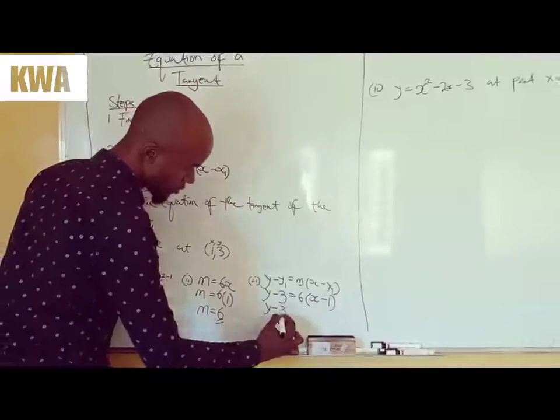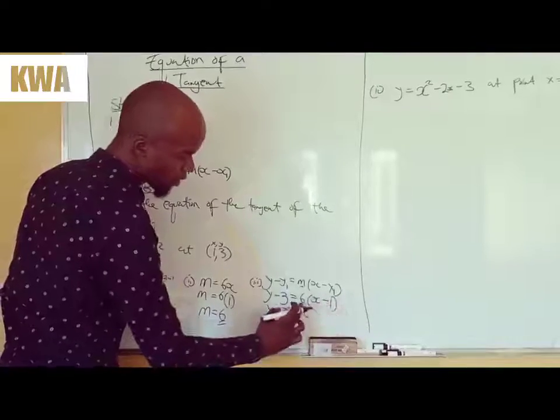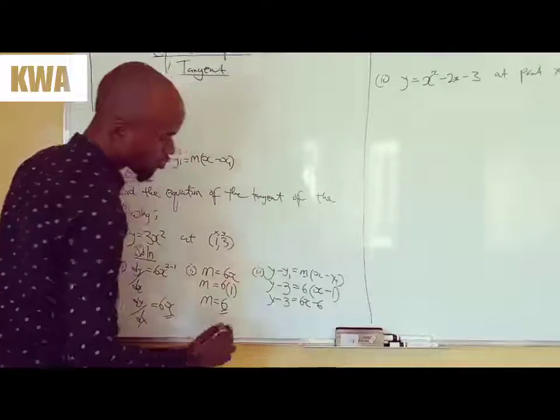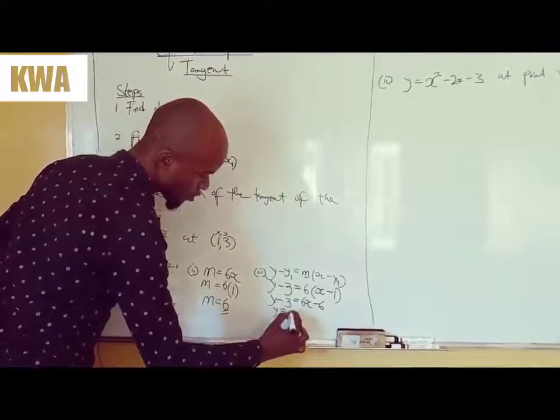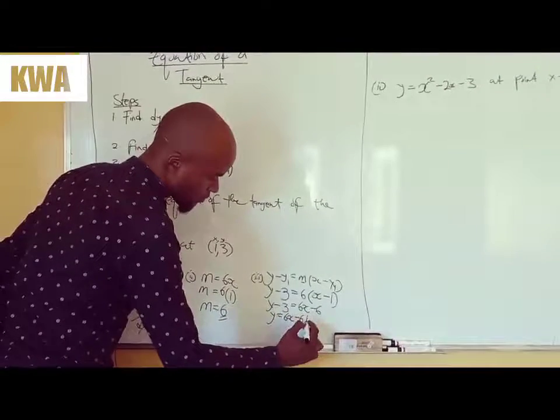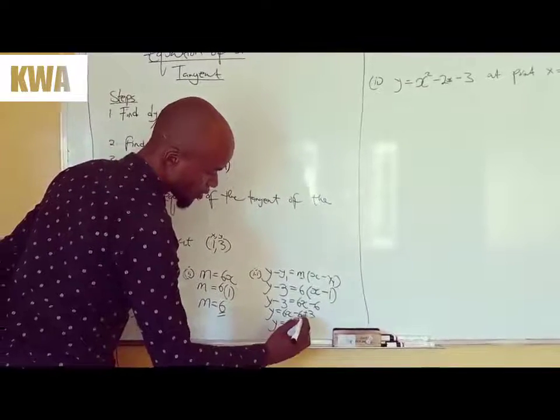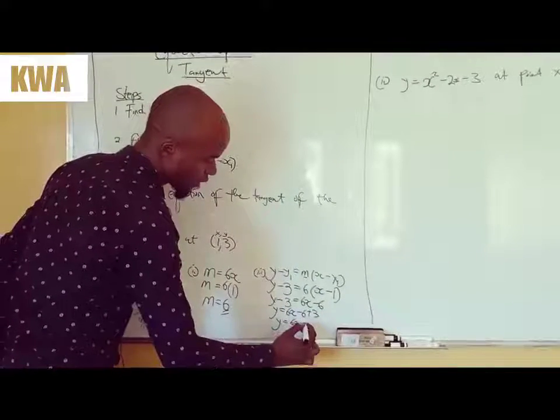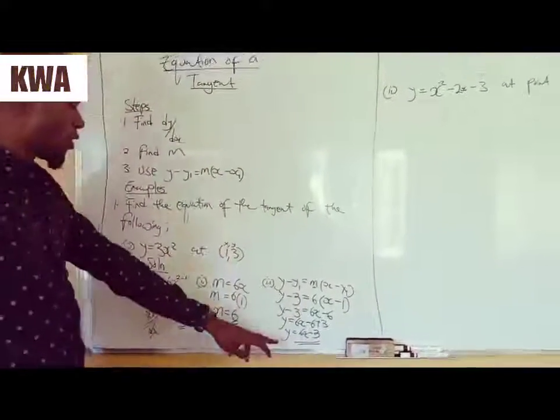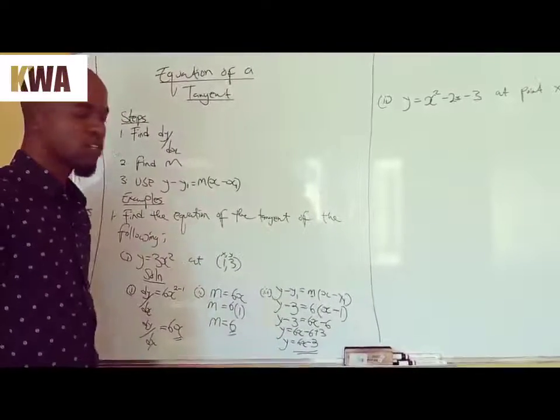So y minus 3 is equals to 6 times x, 6x. You are now breaking the brackets, 6 times negative 1, negative 6. So what you are going to do is group the like terms. This will be y equals 6x minus 6, this is negative 3 goes the other side, positive 3. So y equals 6x, negative 6 plus 3, this will give you negative 3. That's algebra. So this is your final answer, the y should always be alone. Then this is your equation on the tangent.